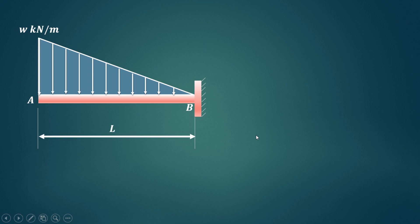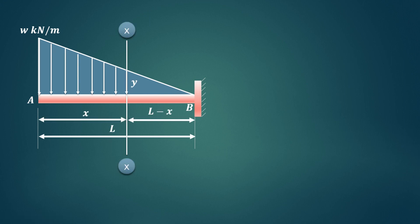The span length is L. Now we'll consider any section XX at a distance X from the free end. So total span length is L, this distance is X, and therefore the remaining distance is L minus X.